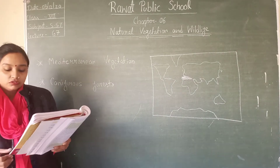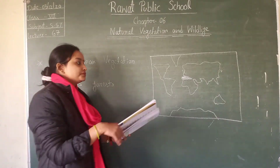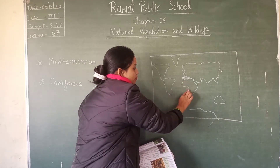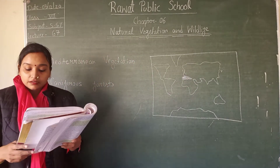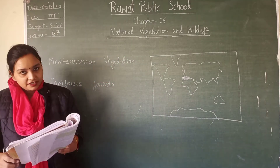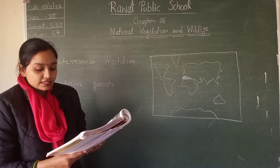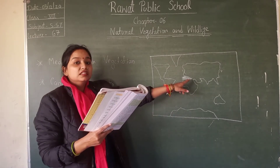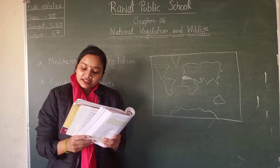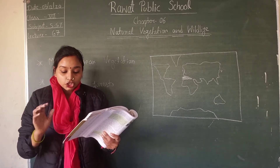The western and southwestern margins of the continents in middle latitudes experience a special type of climate. This climate is called Mediterranean because it is experienced mainly in the areas surrounding the Mediterranean Sea. If you get this same climate elsewhere, it will also be called Mediterranean vegetation.